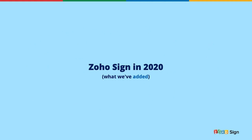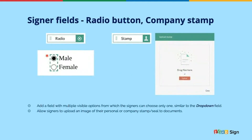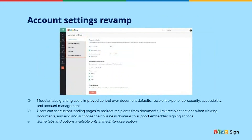Let me quickly take you through what Zoho Sign has added in 2020. Starting off, we've added a couple of new signer fields: the radio button and the company stamp. The radio button allows you to have multiple options visible on the paperwork while being able to choose just one. The stamp field allows you to add your company or individual stamp onto documents, with more enhancements coming in the near future. We also revamped the entire account settings interface, introducing modular tabs that granted users improved control over document defaults, the recipient experience, and security and accessibility aspects.